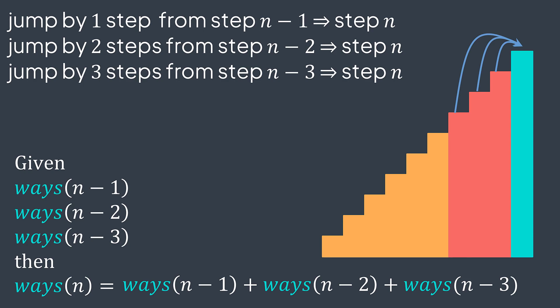Why? Because to go to step n, we can either be on step n minus one, n minus two, or n minus three — all possibilities are valid. So we just combine them by adding them together. As a formula, ways to reach n equals ways to reach n minus one, plus ways to reach n minus two, plus ways to reach n minus three.